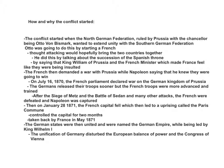Then, on July 28, 1871, the French capital fell, which then led to an uprising called the Paris Commune. Prussia controlled the capital for two months. It was then taken back by France in May 1871. The German states were then united and were named the German Empire, being led by King William I. The unification of Germany disturbed the European balance of power and the Congress of Vienna.